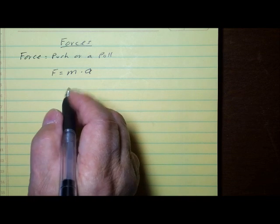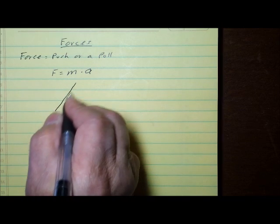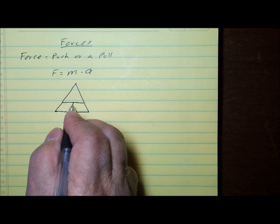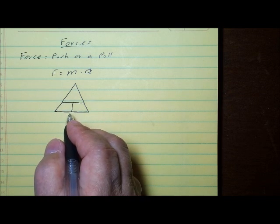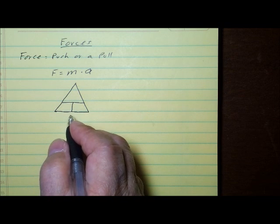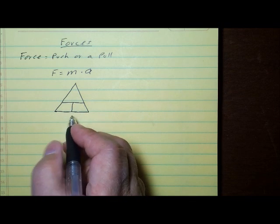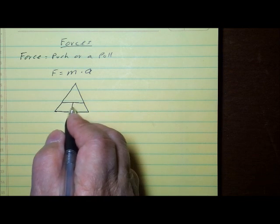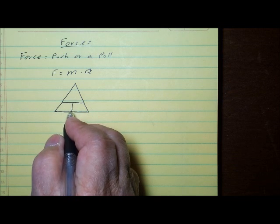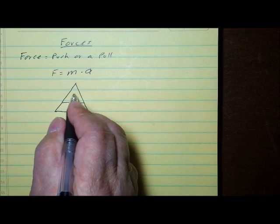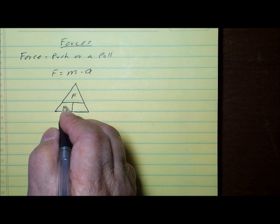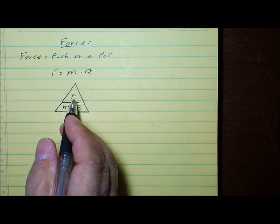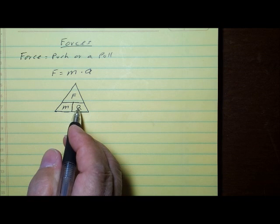Now in a previous video, we looked at something we called the magic triangle. And we put the equation in the magic triangle, and it helped us to rearrange it. Well, we can put this equation into this little magic triangle. It'll help us to rearrange it also. We can say that, if you recall, this line is division. This line means multiplied by or multiplication. So force equals mass times acceleration. That's how we put it in the triangle. Force equals mass times acceleration.